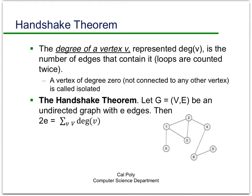Now I want to talk about our first theorem. First, we need one more definition. The degree of a vertex, represented by deg of V, is the number of edges that contain it. A vertex of degree zero is a vertex that doesn't have any edges—it's isolated.